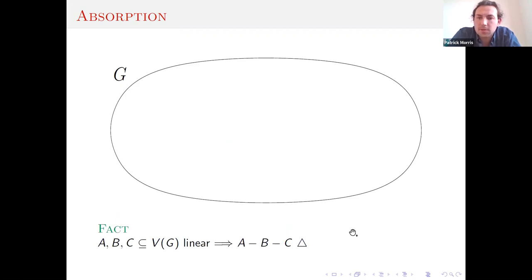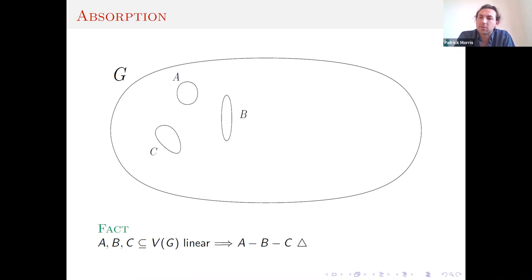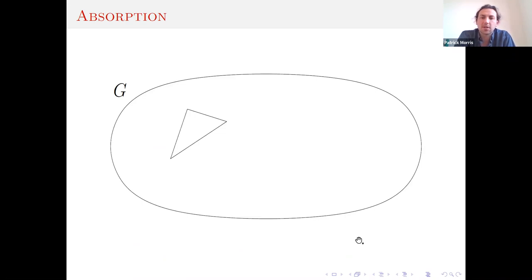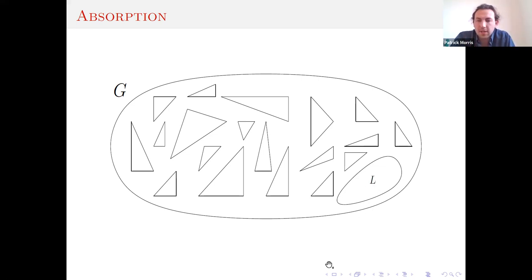One thing you can easily show with this condition is that you find triangles within any three linear-sized sets. This follows from the expander mixing lemma: you find a vertex with expected degree into each set, and the expander mixing lemma gives an edge within its neighborhood. So we can greedily pull out triangles: find three linear-size sets, find a triangle, take it into our factor, and repeat. But then we're left with some small linear or sublinear set and we have no guarantee that there's a triangle there. We're stuck.